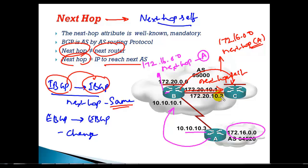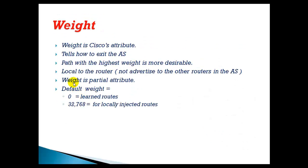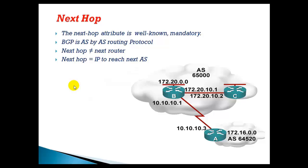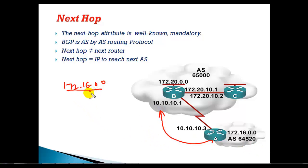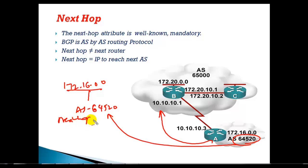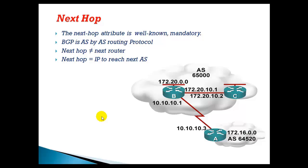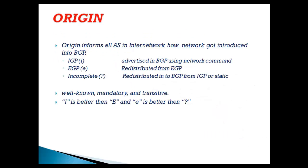The next hop is not simply your next router — it is the next IP address used to reach the next autonomous system. When BGP carries an update, it includes this next hop information along with the network and AS path information. So both AS path and next hop are well-known mandatory attributes carried with every BGP update.